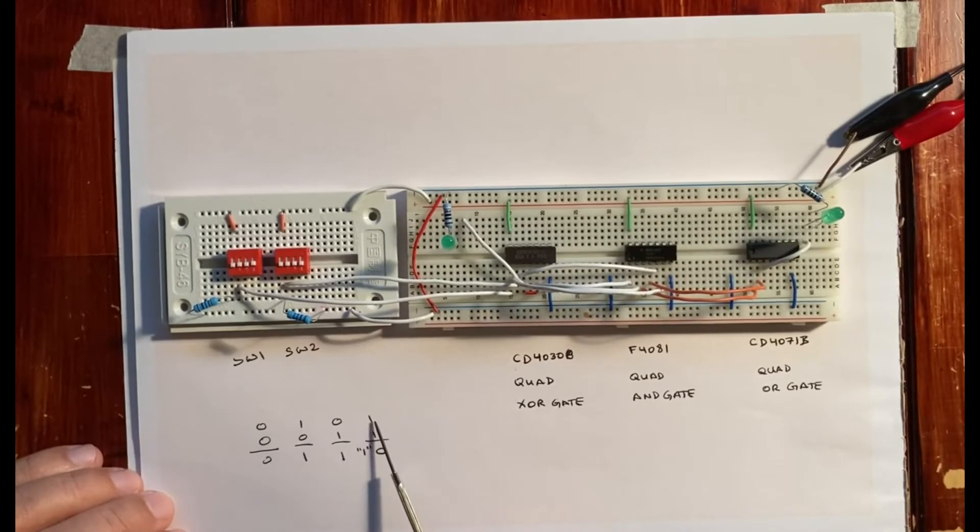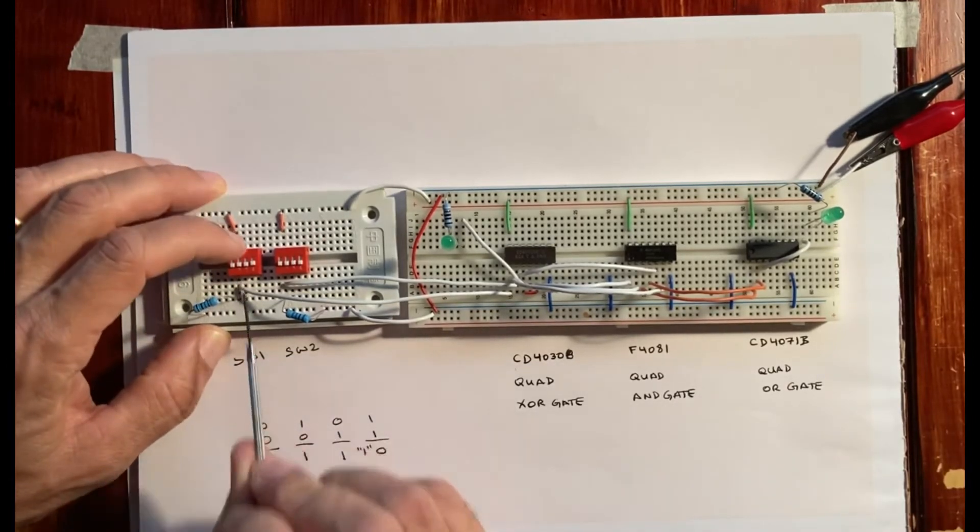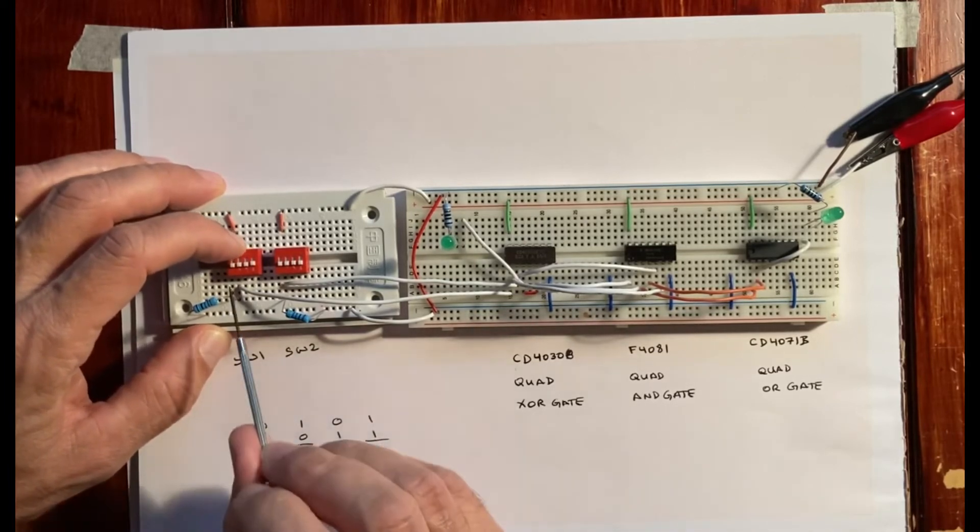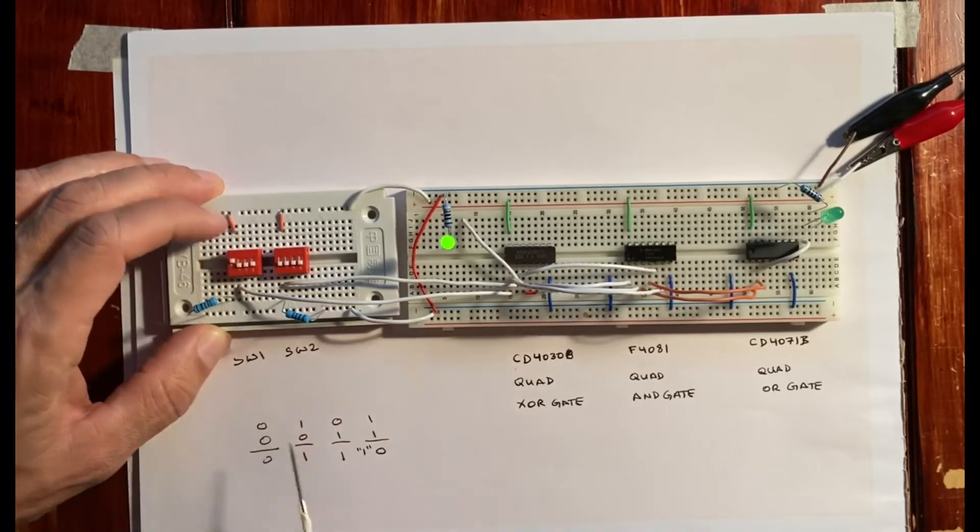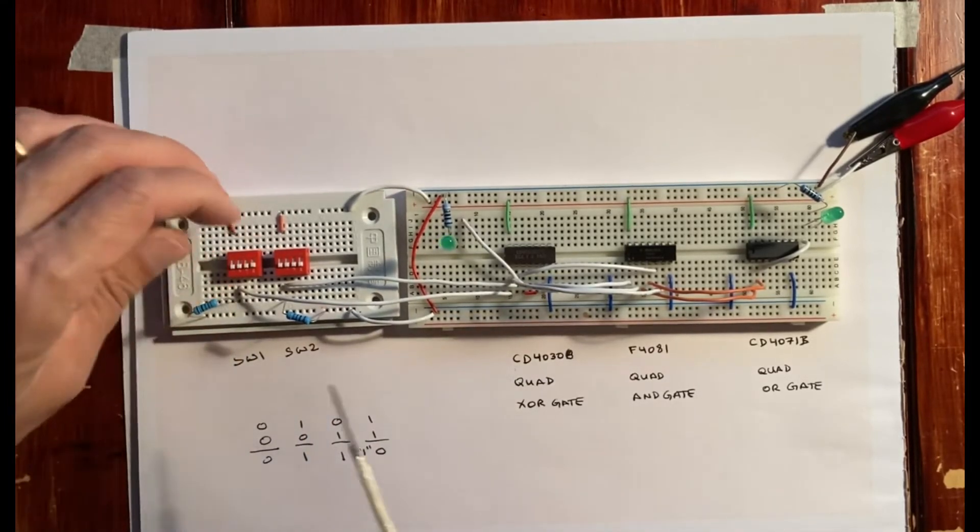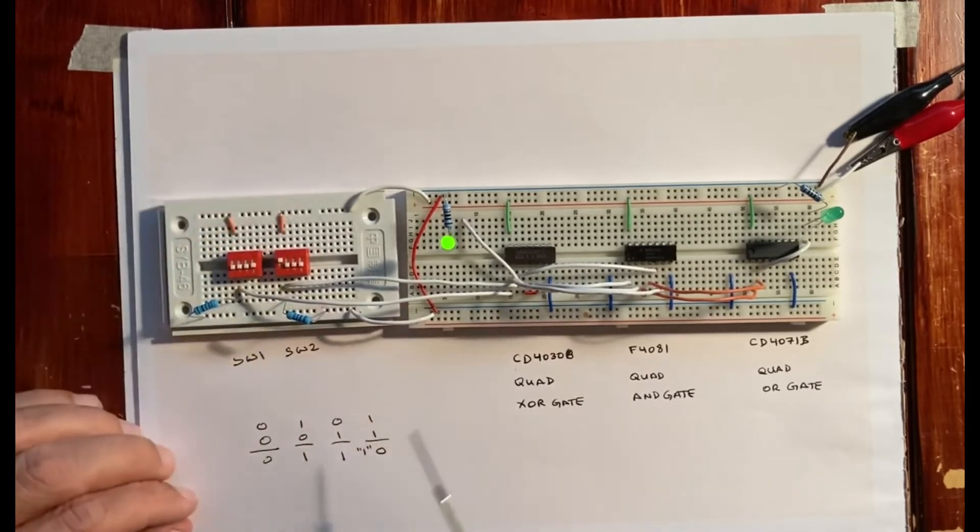This light right here should be our result bit and this should be our carry bit. The carry bit should only come into play when we have 1 and 1, which in binary gives us 0 but we carry a 1. Right now we have 0 and 0 and we get the light off. We make sure we have 5 volts DC. Now we do the first one: 1 and 0 gives us 1.